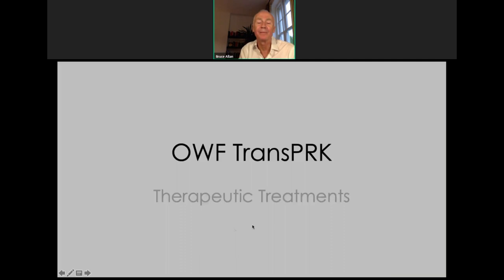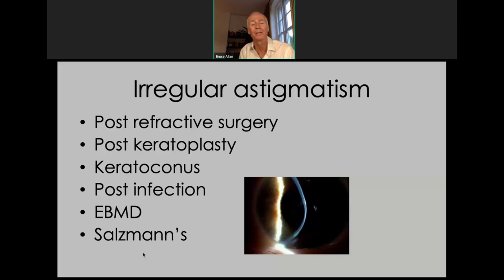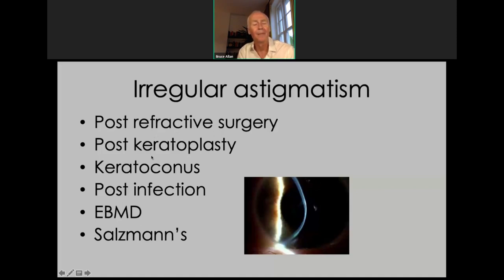Now moving to therapeutic treatments — the reason I'm so glad that Schwind is keen on extending capabilities to the therapeutic area is that many of us are corneal surgeons too, and we have difficult patients we'd like to help. There's more detail on YouTube about my approach. The typical cases we see are old RK cases, small-zone 1990s PRK cases, post-keratoplasty cases, ectasias, post-infection cases, epithelial basement membrane dystrophies, and Salzmann's nodular dystrophies — all presenting with irregular astigmatism.